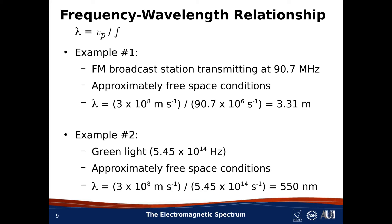Now, light is a form of EM radiation, so we can do a comparable example for light. In example number two, we'll consider light that has the color green, which has a frequency of about 5.45 times 10 to the 14 hertz — much larger than that of the FM radio station, in fact larger by many orders of magnitude. If we let that green light propagate through free space, then the wavelength is again C divided by frequency, giving us a scant 550 nanometers — one nanometer is one billionth of a meter. Nevertheless, we see that the frequency-wavelength relationship applies equally well to radio waves and light.